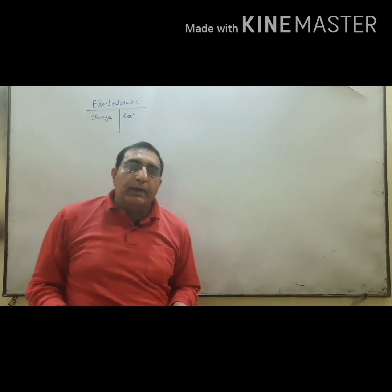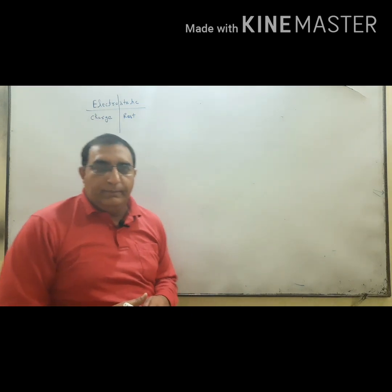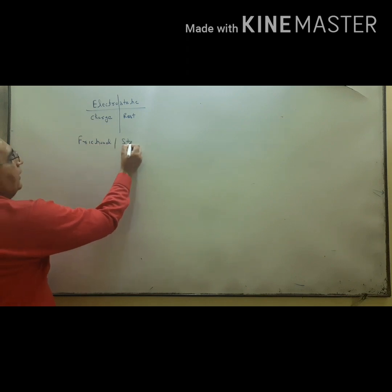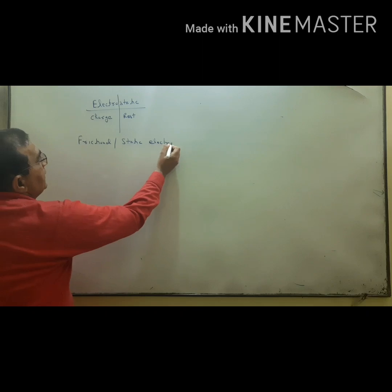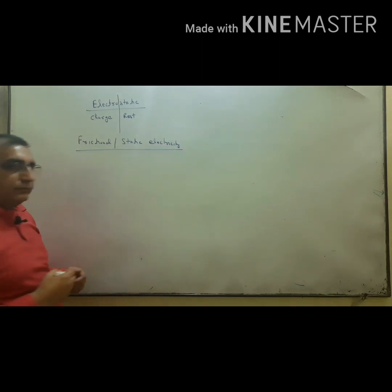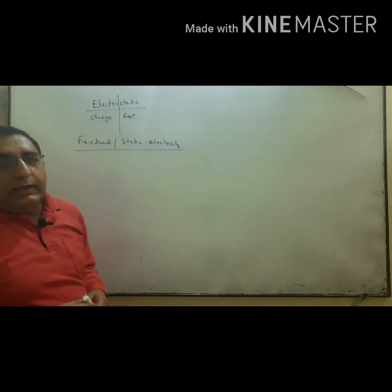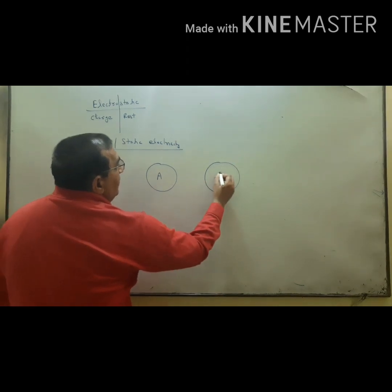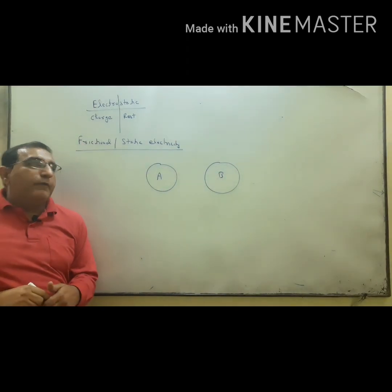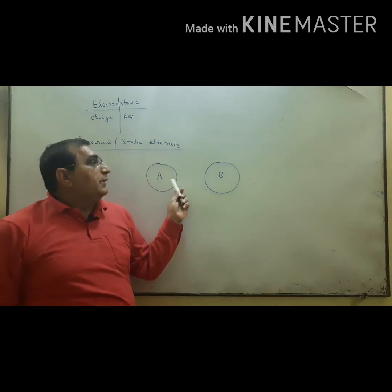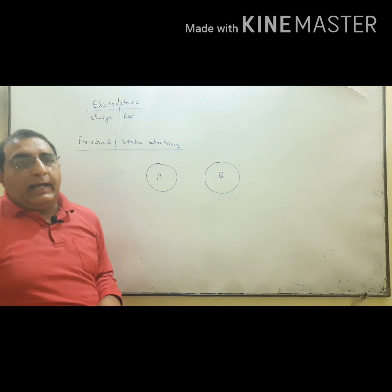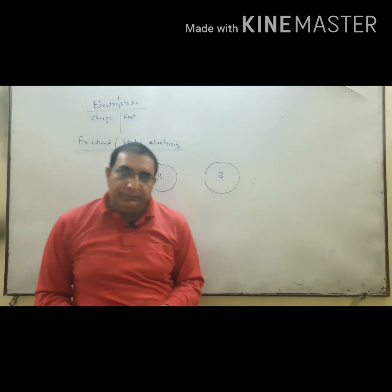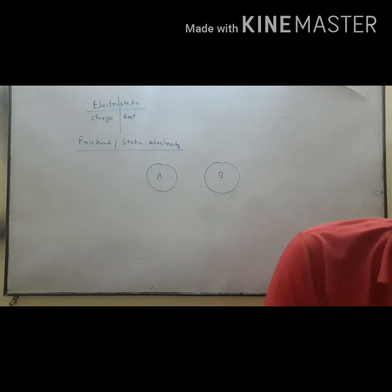In this whole chapter we will study charge at rest. The first topic is frictional electricity, also called static electricity. Static electricity means: suppose this is body A and this is body B. When a body is rubbed with another body, charges are produced on the body, and these charges are static in nature — hence it is called static electricity.